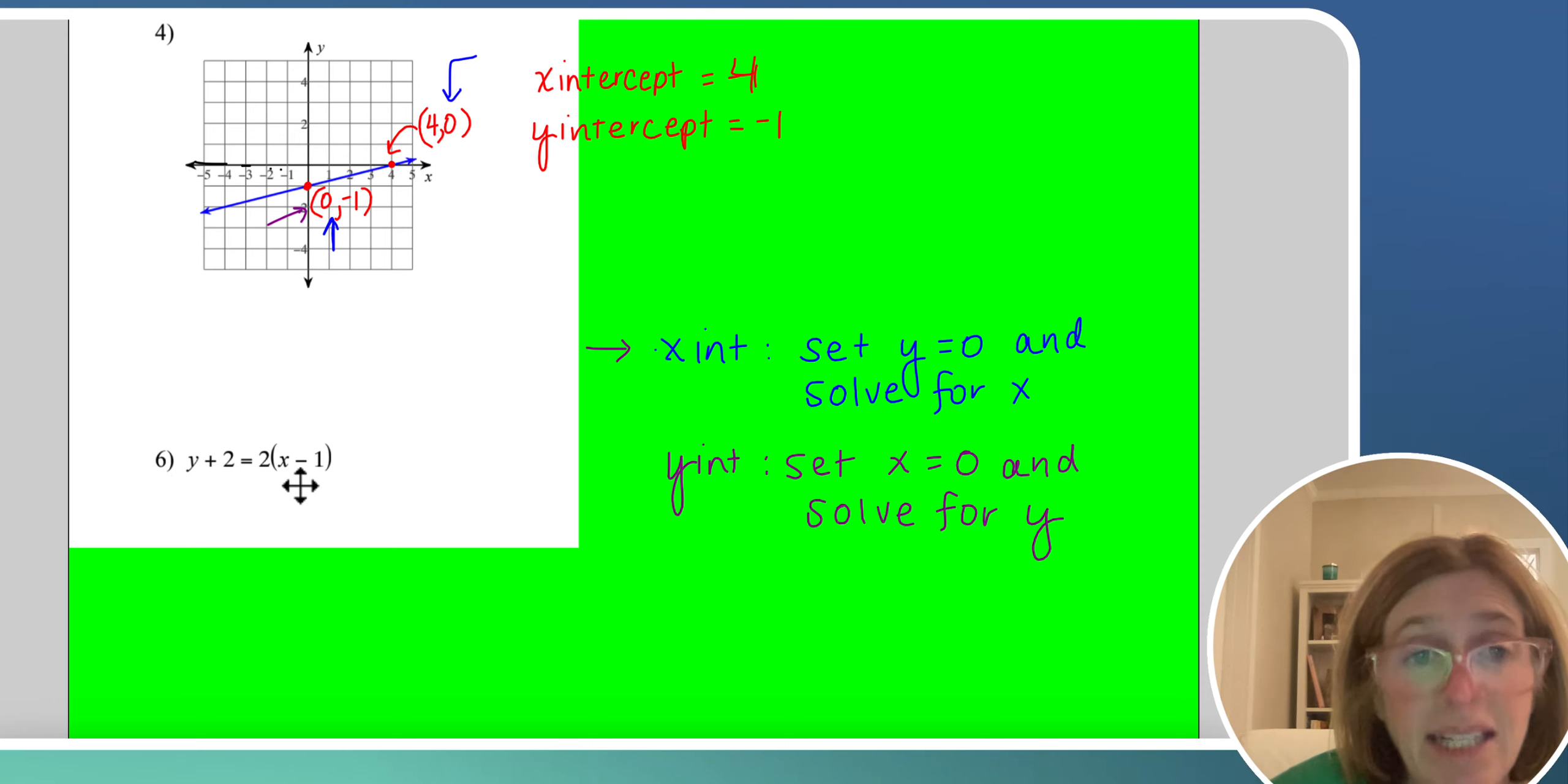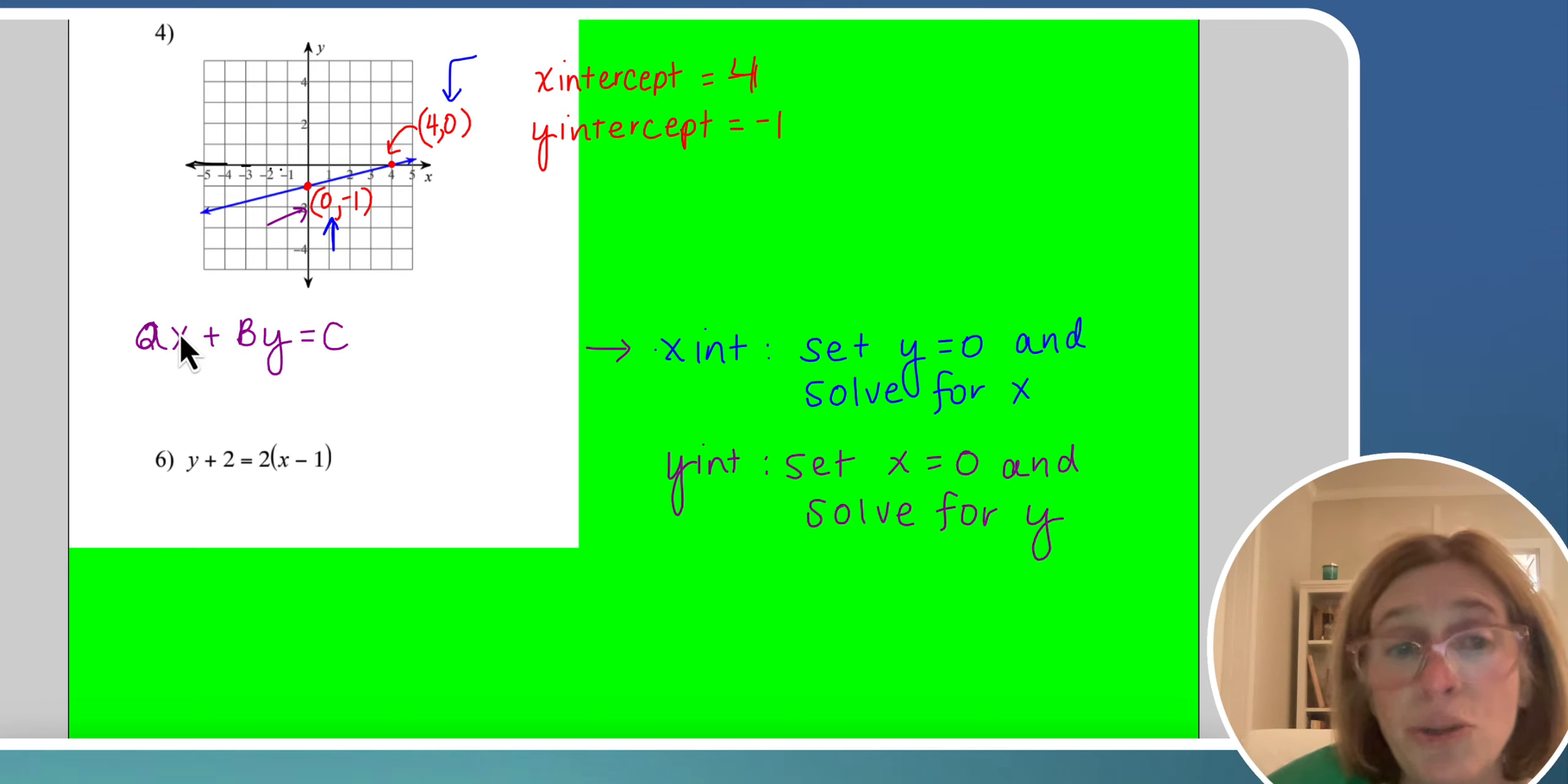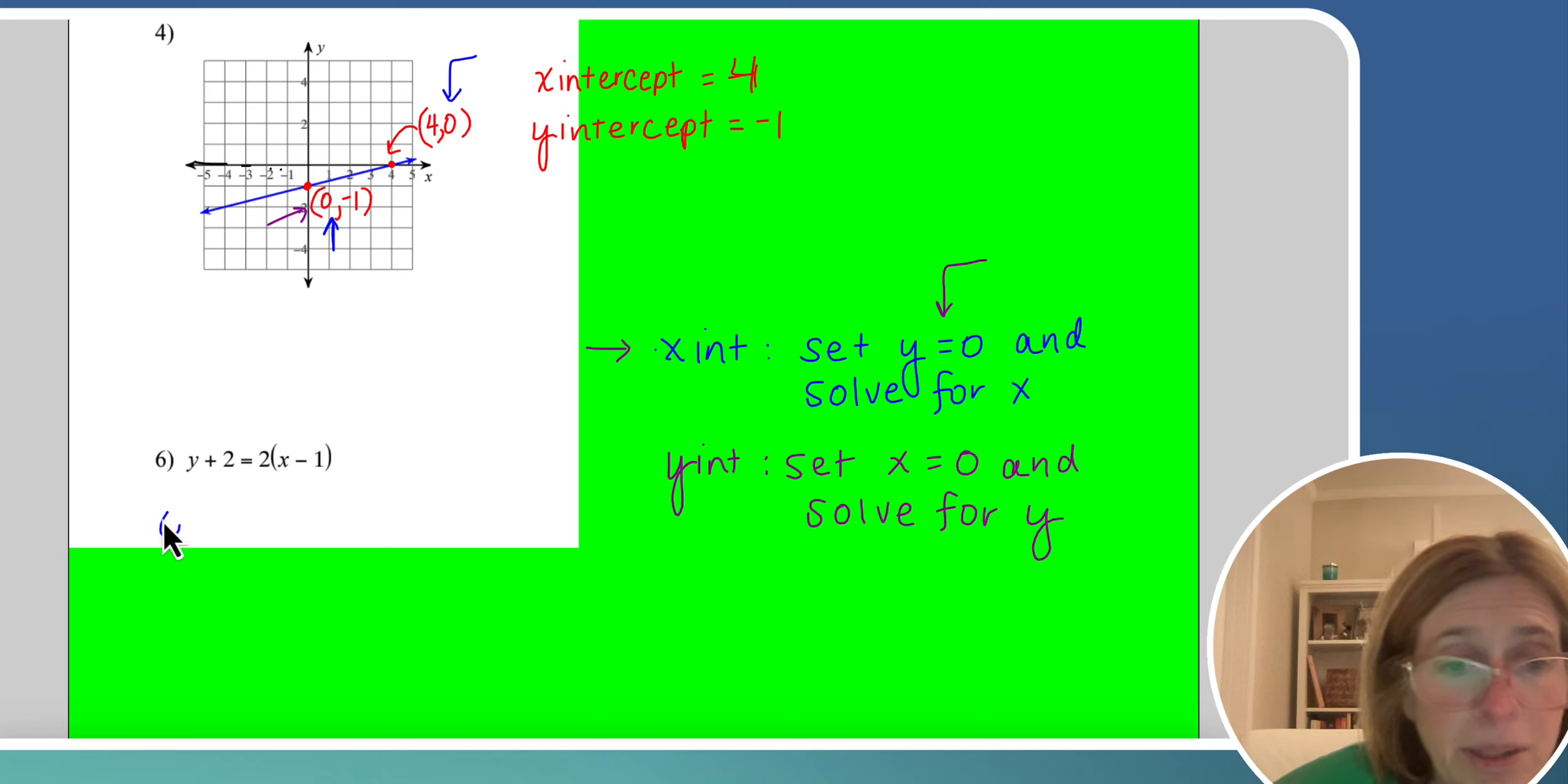I tend to get it in what's called standard form, because I just think it's easier that way. Standard form would be Ax plus By equals C. But I'm just going to do it directly as it's written to find the x and y intercepts. So if I want to find the x intercept, again, I'm going to set y equal to 0.